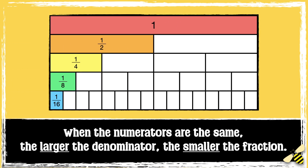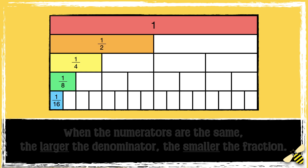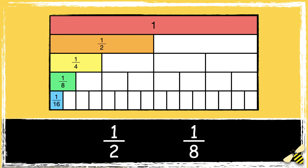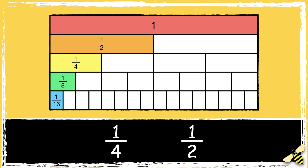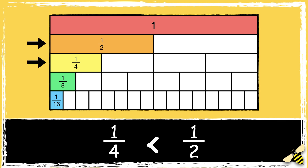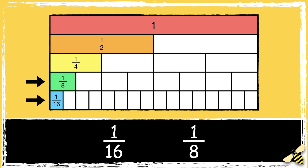So when the numerators are the same, the larger the denominator, the smaller the fraction. We can see that 1 half is greater than 1 eighth, 1 quarter is less than 1 half, and 1 sixteenth is less than 1 eighth.